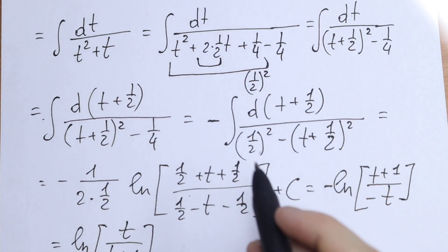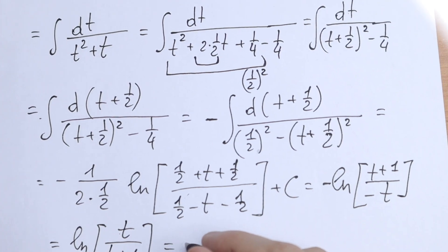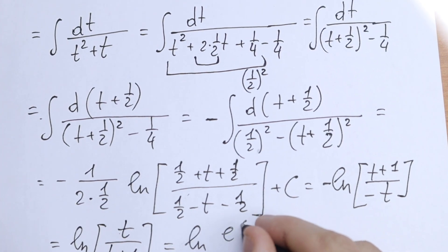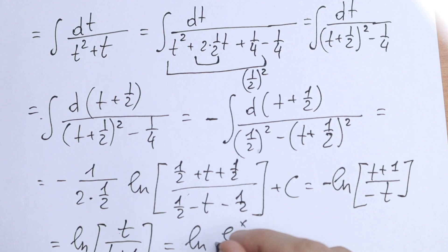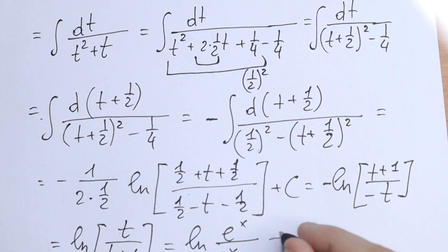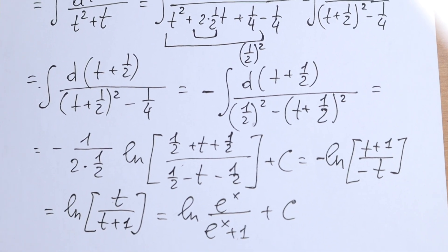Now, since t equals e to the power x, we can substitute back. We get natural log of e to the power x, divided by e to the power x plus 1, plus C. This will be our final answer.